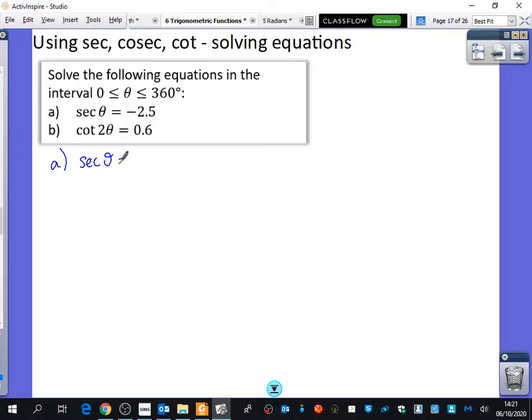So the first equation that we want to solve is this. Now, the calculator can't do sec θ, but what it can do is third letter, cos θ. To go from sec θ to cos θ, we do the reciprocal. So we're also going to do the reciprocal on this side. And reciprocal means 1 divided by. So you're going to do 1 divided by negative 2.5, which is minus 2 fifths. So you can take the reciprocal of both sides.